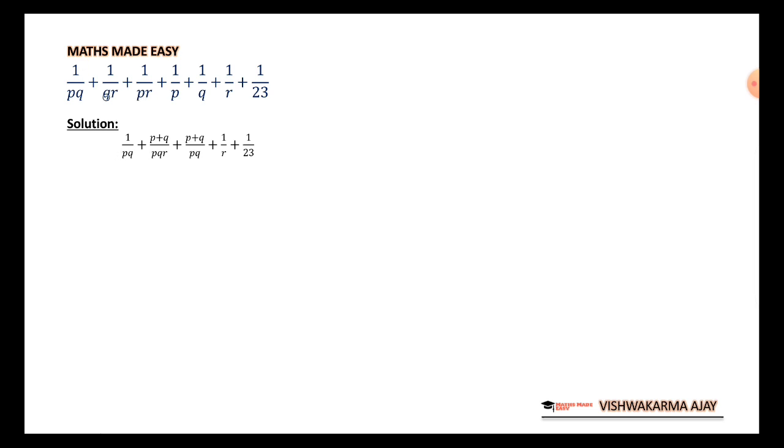1 upon pq, pr, qr. Since r is common, I will send only p to here and q to here. So p plus q upon pqr. And q and p, p plus q upon pq. The rest is the same.